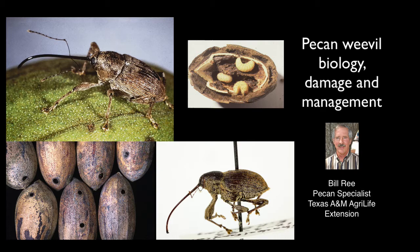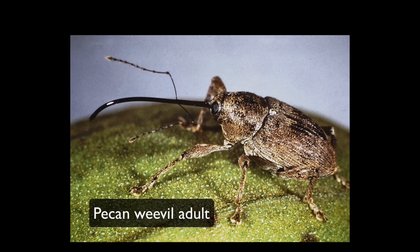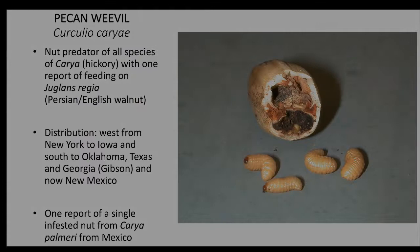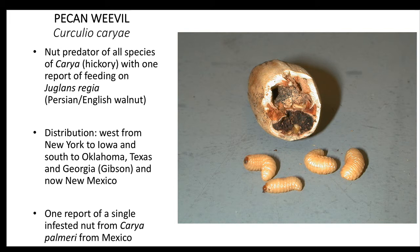Anybody that produces pecans either commercially or as a hobby understands the impact of an insect on its crop. For this video, we'll talk about the pecan weevil, which is a major nut predator of pecan. This is also known to infest all species of hickory and one report of an infestation of walnut.